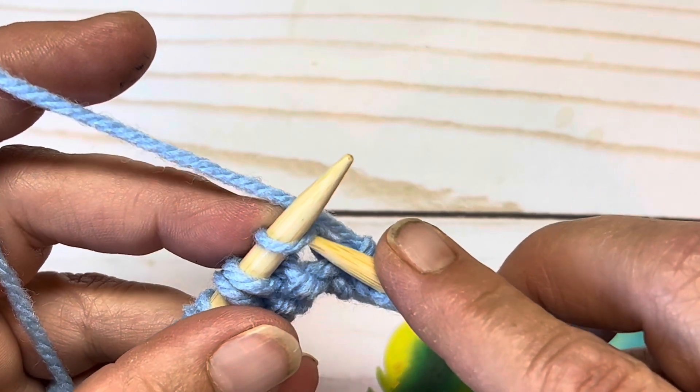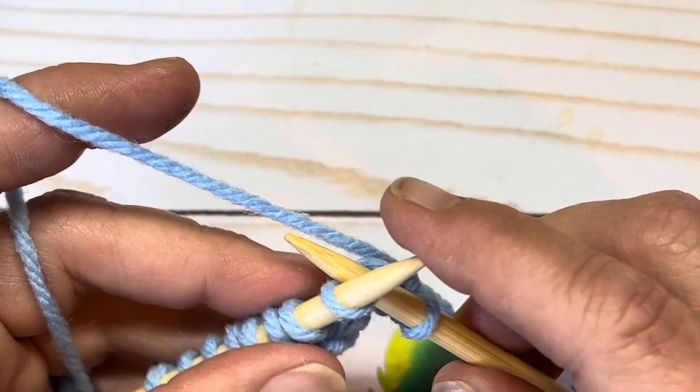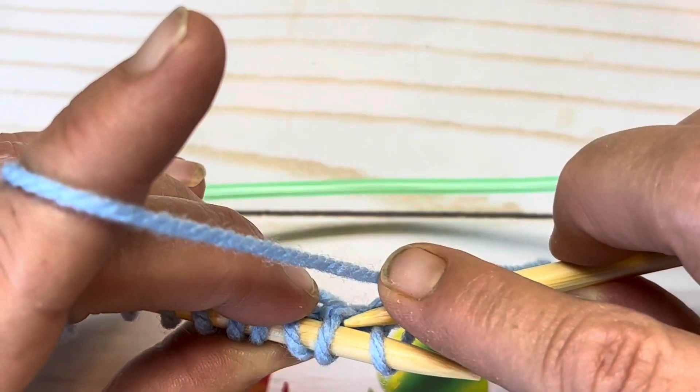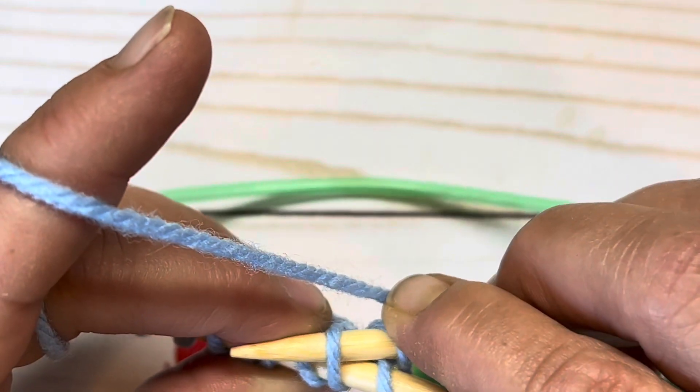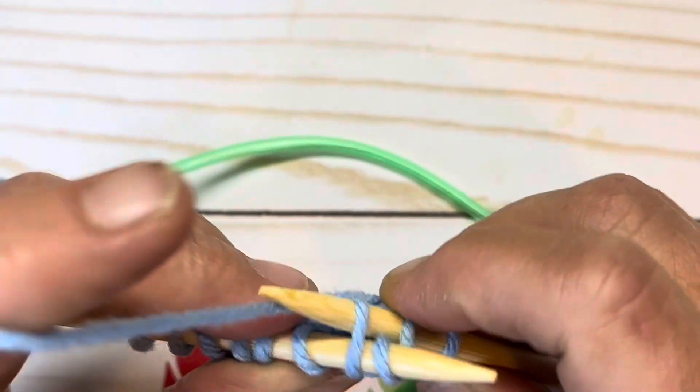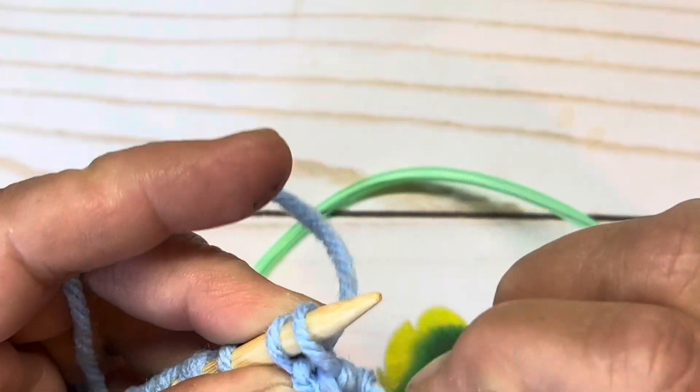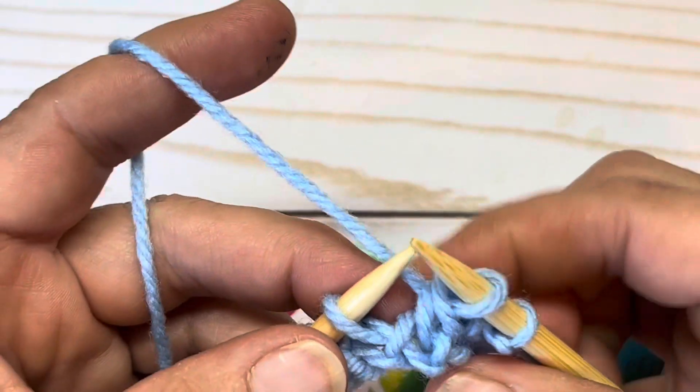We're going to insert our needle as if to knit that first stitch. Then we're going to tilt our work so we can see the back leg of the second stitch, and insert your needle under that leg. Yarn over and pull that yarn over through both of those stitches. Now you can drop those stitches.